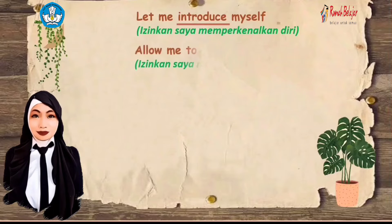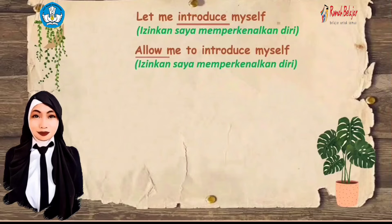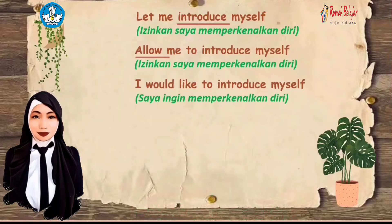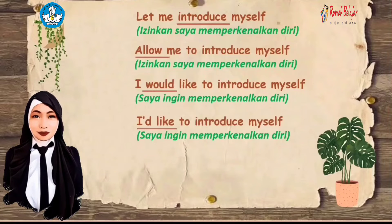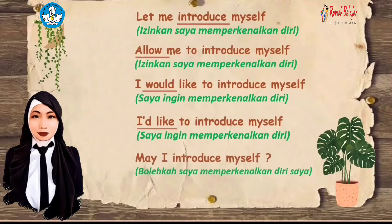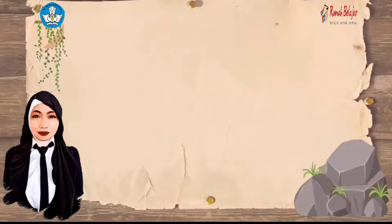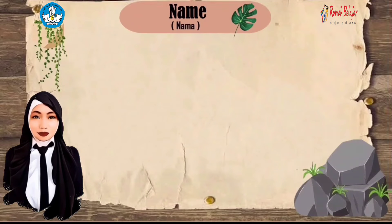Next, you can use: 'Let me introduce myself.' Then: 'Allow me to introduce myself' — allow is pronounced 'allow.' Also: 'I would like to introduce myself,' which can be shortened to 'I'd like to introduce myself.' And: 'May I introduce myself.'